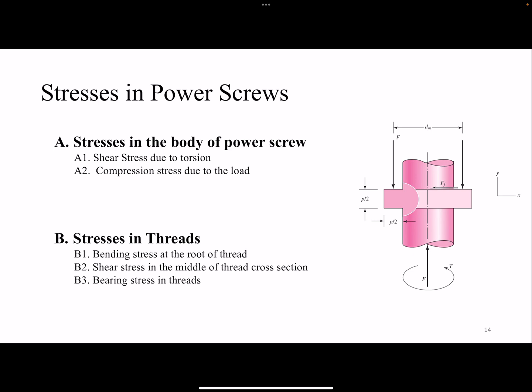We're going to divide it into two categories, the stresses in the body of the power screw and the stresses on the threads. So the body of the power screw is this cylinder with a root diameter of dr. It's going to be under torsion during this and it can fail due to that torsion or it can fail through the compression.